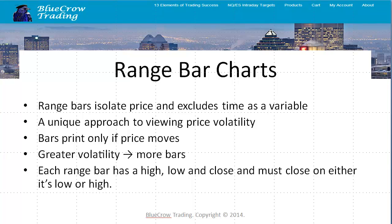I'm a day trader. I scalp part of my position and keep runners for the remaining position. I am focused on how price is moving at particular points on the chart, and I'm less concerned about the time aspect in general. So I found it a very unique approach to focus specifically on price volatility. Given that range bar charts are focused on price volatility, bars will only print when price movement takes place. If price is not moving at all, the range bar will not fluctuate.